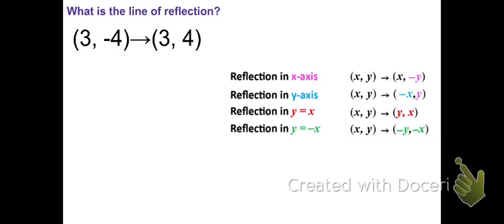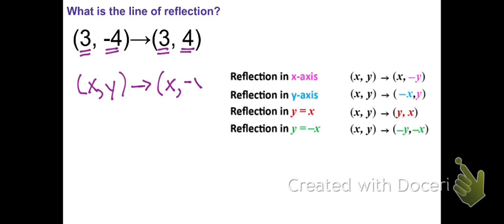One more — what is the line of reflection? The x-coordinate stayed the same, but the y-coordinate was negative and is now positive. So (x, y) became (x, -y): the x-coordinate stayed the same, but the y-coordinate is now the opposite sign. That is a reflection over the x-axis.